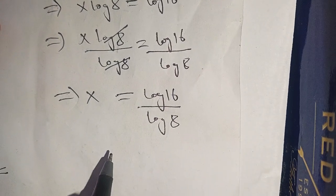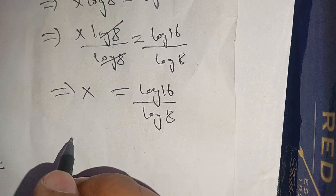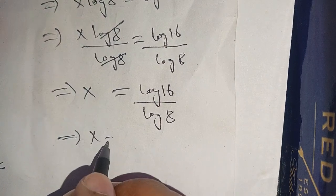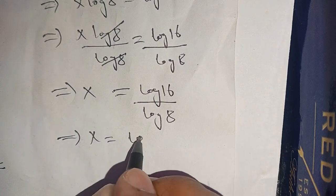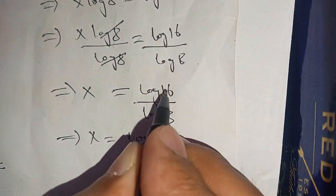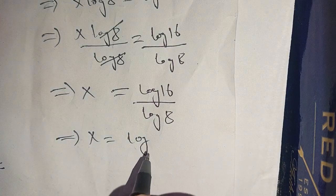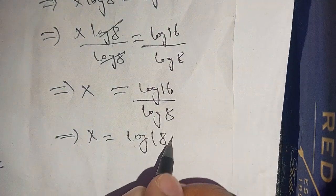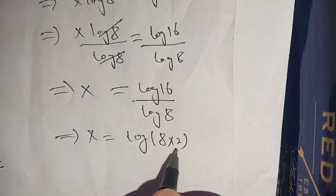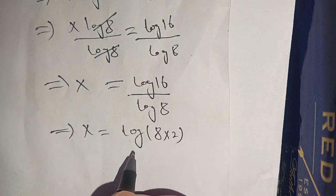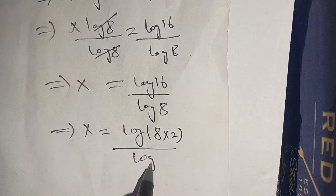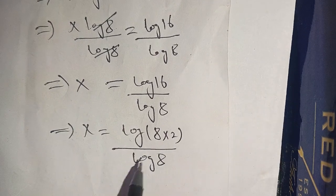Now in the next step, we can write log of 16 as log of 8 times 2, since 8 times 2 equals 16. So x is equal to log of (8 times 2) divided by log of 8.